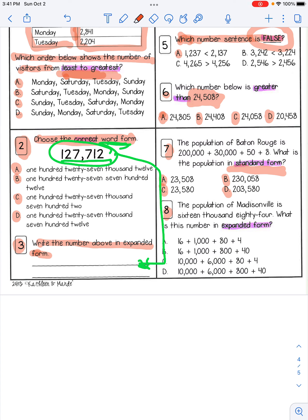The population of Madisonville is 16,084. What is this number in expanded form? A, 16 plus 1,000 plus 80 plus 4. B, 16 plus 1,000 plus 800 plus 40. C, 10,000 plus 6,000 plus 80 plus 4. D, 10,000 plus 6,000 plus 800 plus 40. So one of these is this number right here, 16,084.